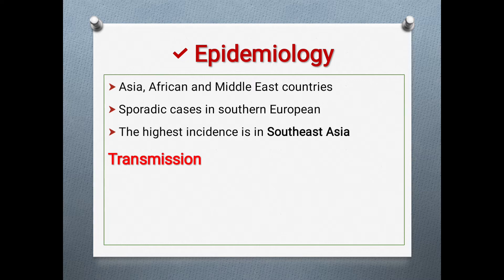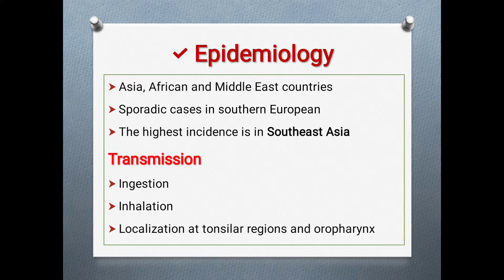Transmission of the disease occurs through ingestion — meaning contaminated feed and water can transmit this disease — and through inhalation of nasal discharges and organisms. Localization at the tonsillar and oropharyngeal regions may also be responsible for contaminating various fomites and objects.